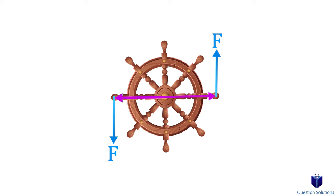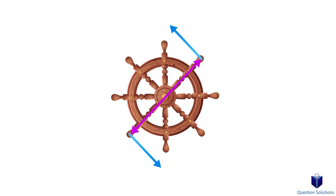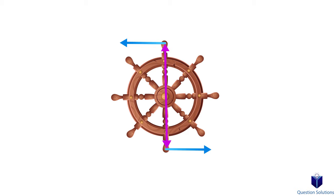In 2D problems, all we need is the perpendicular distance from one force to the other. Even if we move this force to this point or this point, it won't make a difference, because what determines the couple moment is the perpendicular distance between them. This is also why a couple moment is called a free vector. So in scalar problems, we can find the moment by multiplying the force by the perpendicular distance.